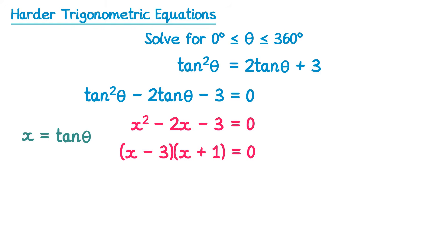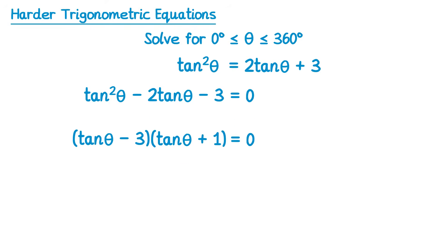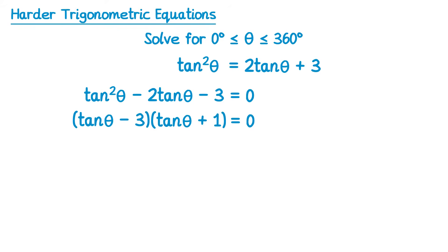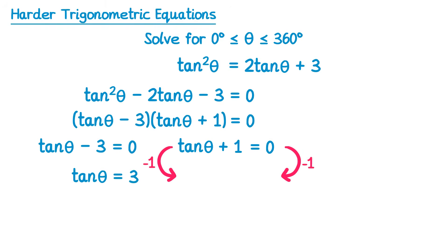Since the quadratic factorises that way, the trigonometric version factorises in the same way. Replacing x with tan theta: tan theta minus 3, times tan theta plus 1, equals 0. Setting each bracket to 0 gives tan theta minus 3 equals 0 or tan theta plus 1 equals 0. Rearranging: tan theta equals 3, or tan theta equals negative 1.